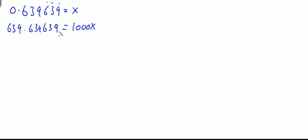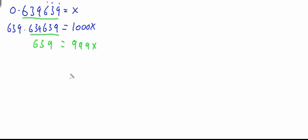So 1000x equals 639.639639 recurring. Now if we subtract x from 1000x, the recurring decimal parts cancel out, giving us 999x equals 639. We now have a simple equation — we divide both sides by 999 to leave x on its own, so x equals 639 divided by 999.